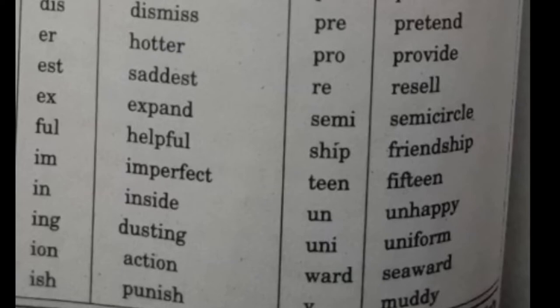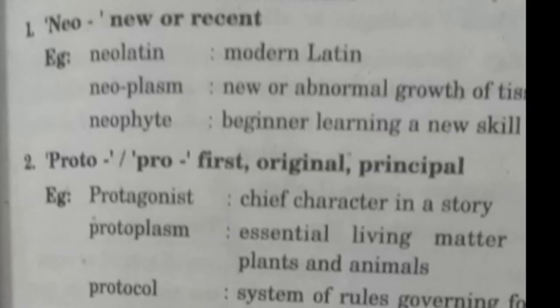Now let us look at some prefixes. The first is 'neo,' meaning new or recent — for example, 'neo-Latin' (modern Latin) and 'neoplasm' (new or abnormal growth of tissue). The next is 'proto,' meaning first, original, or principal — for example, 'protagonist' (chief character in a story), 'protocol' (system of rules governing formal occasions), and 'protoplasm' (essential living matter of plants and animals).